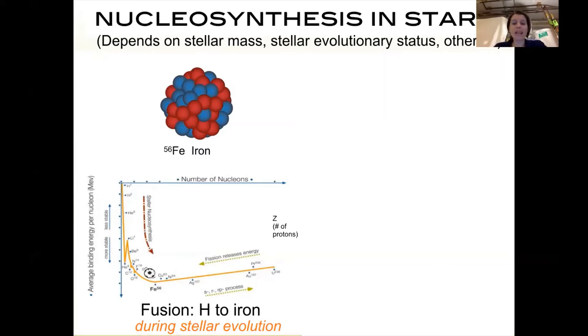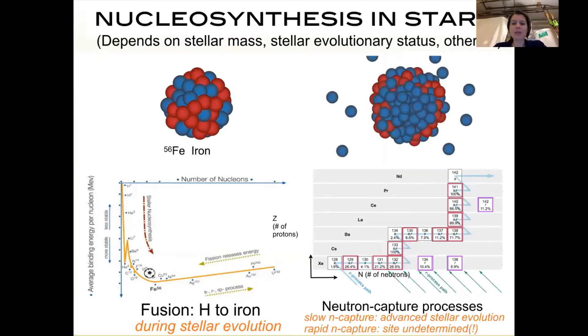What about all the other elements in the periodic table? There are many more elements that are heavier than iron. They come predominantly from neutron capture processes. There are two different types: the slow neutron capture process and the rapid one.